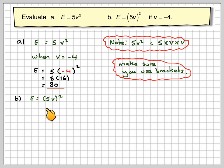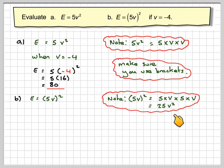Then we've got part B. E is (5V) all squared, because the V are in brackets. So we need to note that (5V) all squared means 5 times V times 5 times V, which is 25V squared.